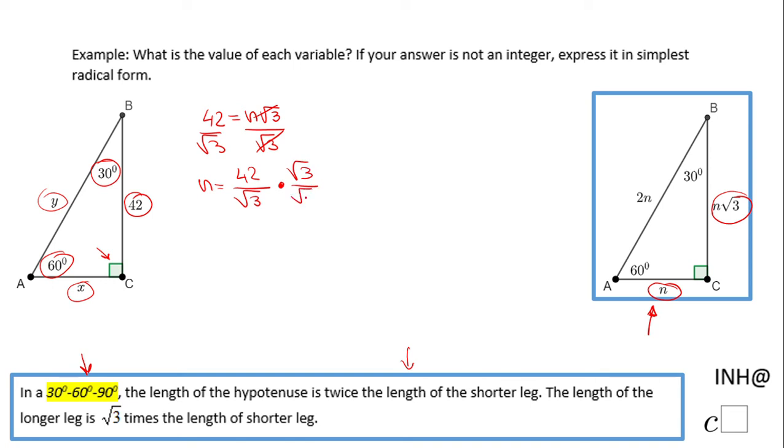We're going to multiply by √3/√3, which is 1, so we end up with 42√3/3 because √3 times √3 is 3. What else you can do is simplify here: 3 goes into 42 fourteen times. So the final answer for n is 14√3.